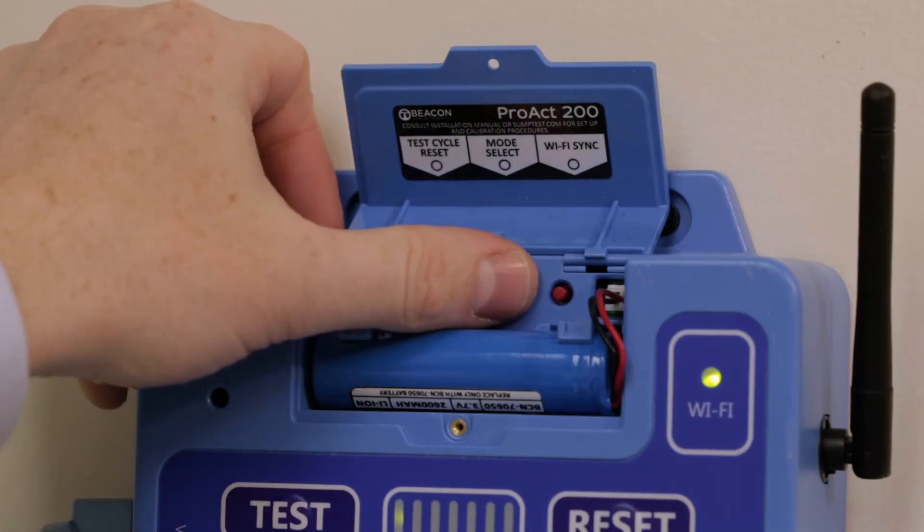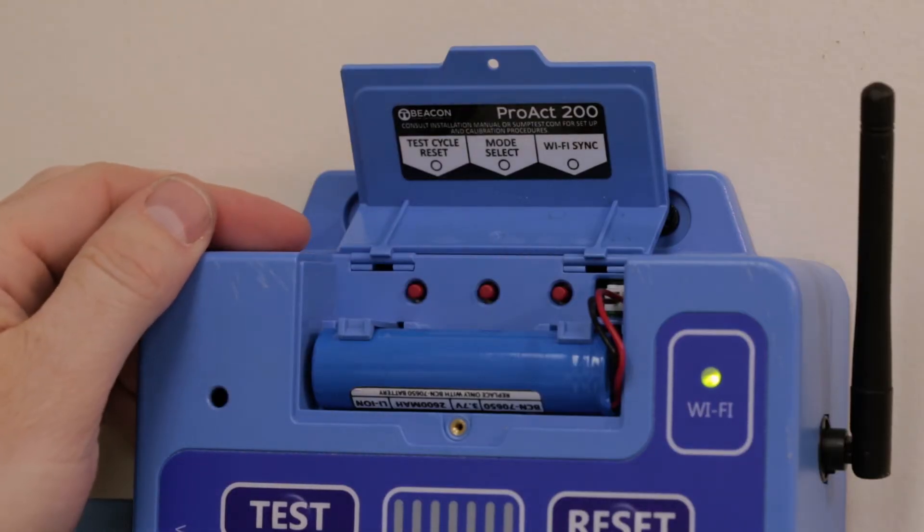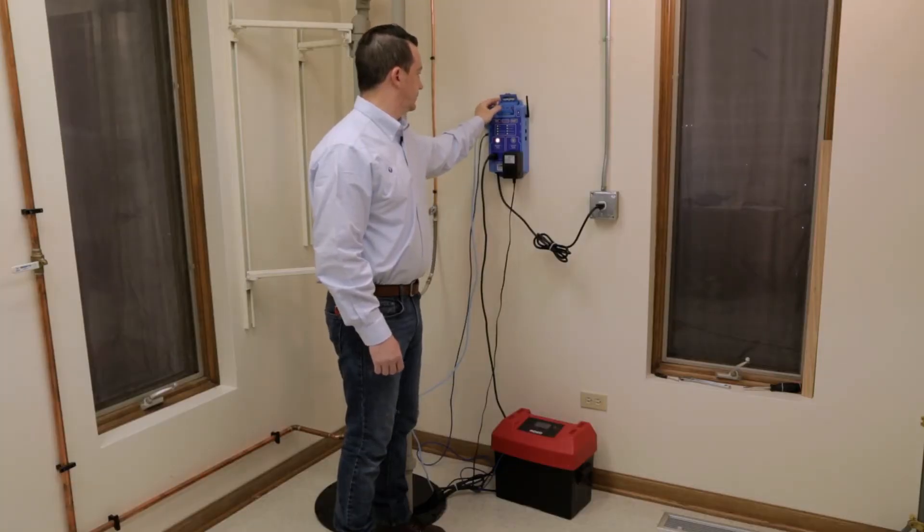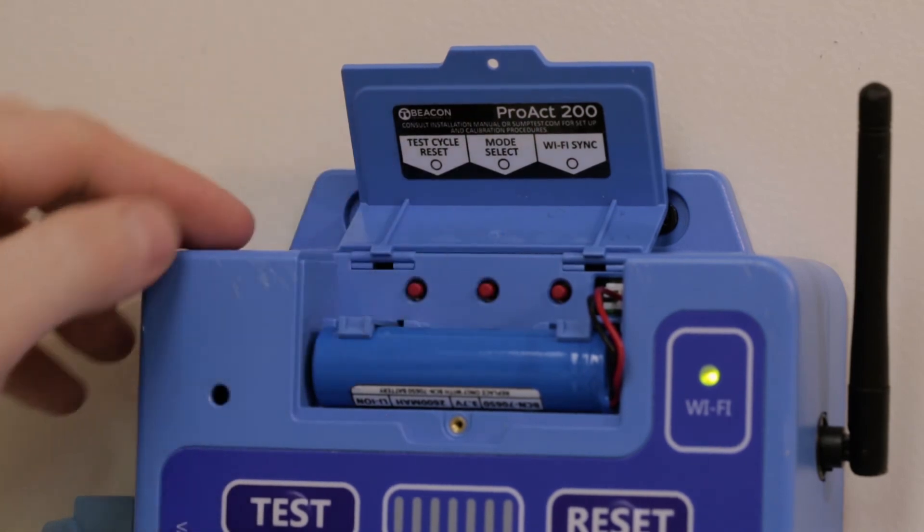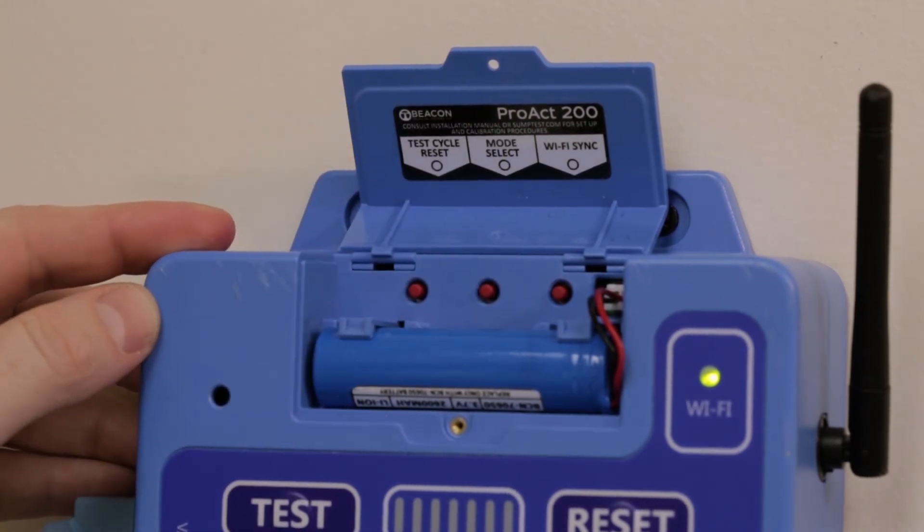If you have a single pump installation, select the single pump mode by pressing the red mode select button in the battery compartment once. If you have a dual sump pump installation with a battery backup pump like this installation, select the dual pump mode by pressing the mode select button one more time.